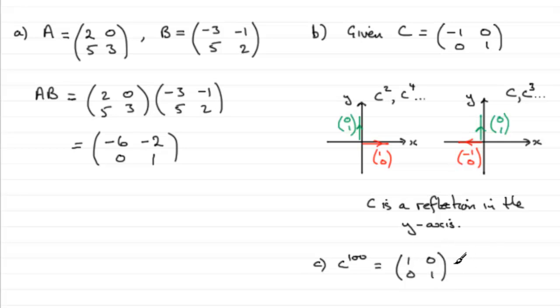This matrix, often called the identity matrix I, it produces no change in the original setup. Okay, so there you have it, C to the 100.